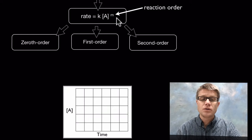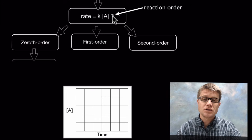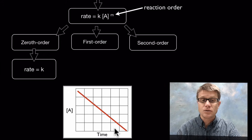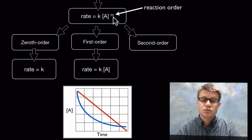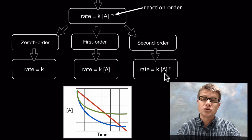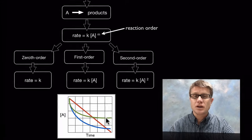The three reaction orders we'll cover are zero, first, and second. In a zeroth order reaction, [A] is raised to the zero power, which equals one, so rate equals k — just the rate constant. In a first order reaction, rate equals k times [A], giving a curve that's fast at the beginning and slows over time. In a second order reaction, rate equals k times [A]^2, meaning the reaction actually goes faster the more reactant we have.